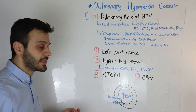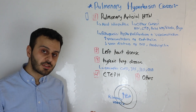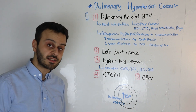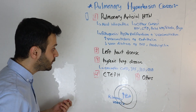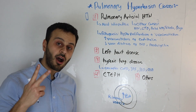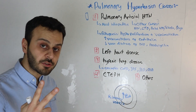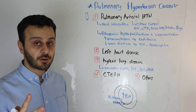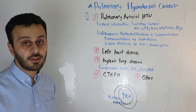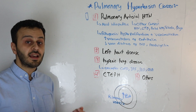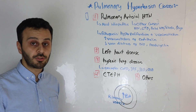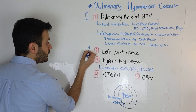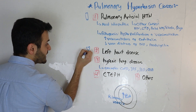Class 2 is when the source is in the left heart — in patients with left heart disease. To remember this: the heart has two ventricles, two atria, and two electrical nodes, so it is class number two. Also, if you draw the number two and its mirror image right beside it, it looks like a heart.